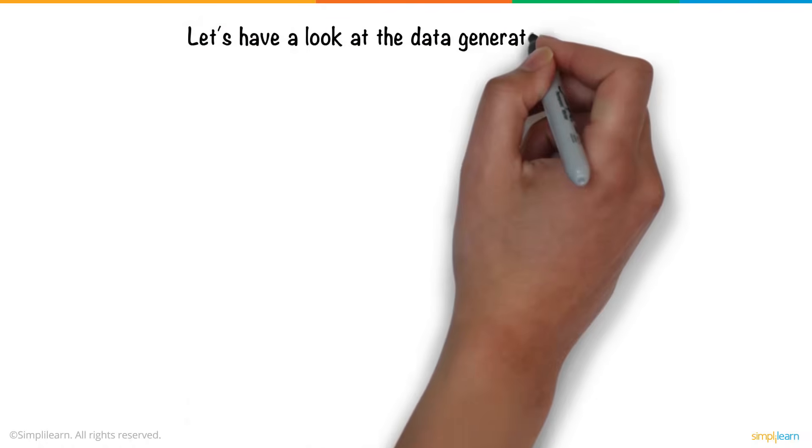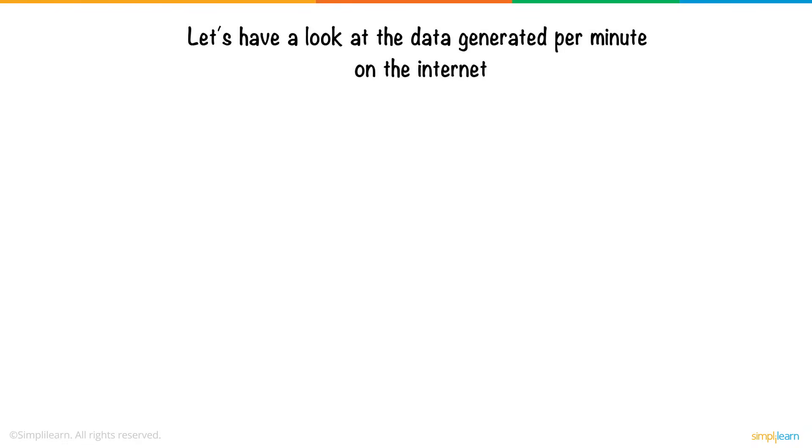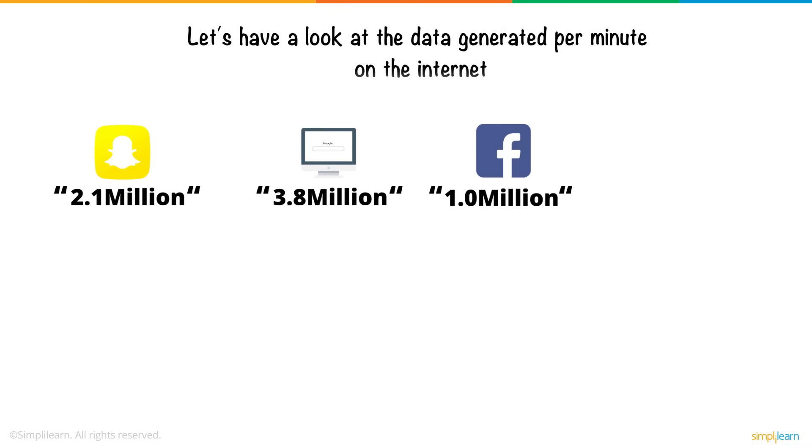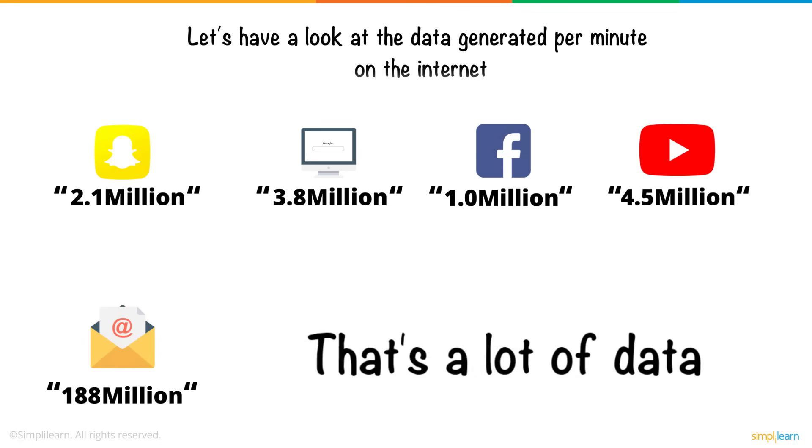Let's have a look at the data generated per minute on the internet. 2.1 million snaps are shared on Snapchat, 3.8 million search queries are made on Google, 1 million people log onto Facebook, 4.5 million videos are watched on YouTube, and 188 million emails are sent. That's a lot of data.